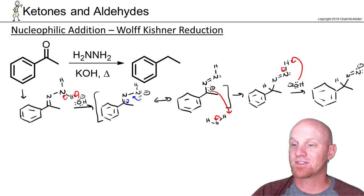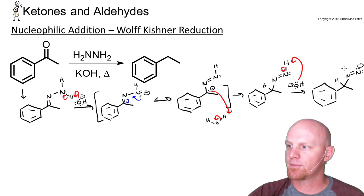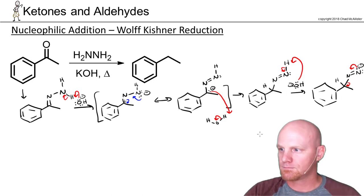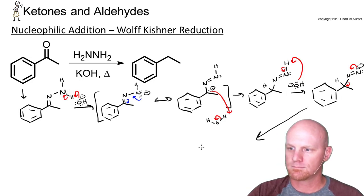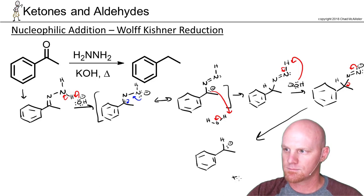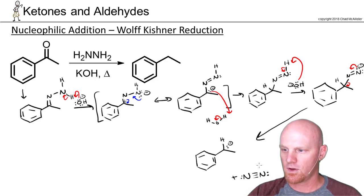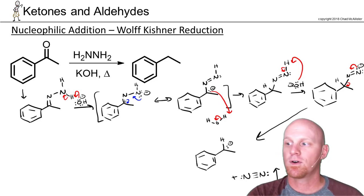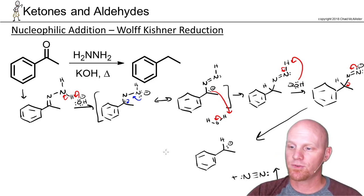Now we've got a carbanion on nitrogen, and this one is not stabilized by resonance. But from here, electrons move in to form a triple bond, causing this bond to break so we don't violate the octet rule. Here we formed our carbanion, but we also formed a molecule of N2, which is just going to bubble out of the solution. We also formed another water molecule back in the previous step.